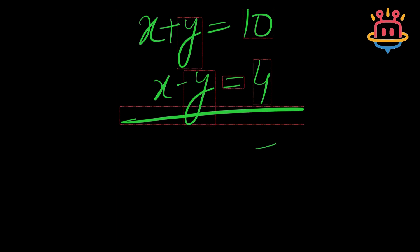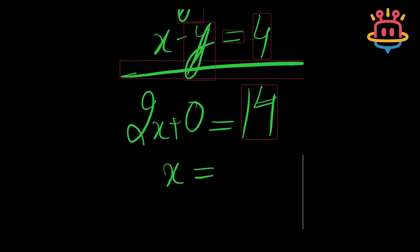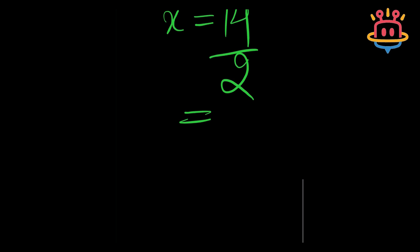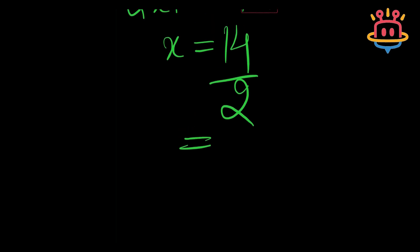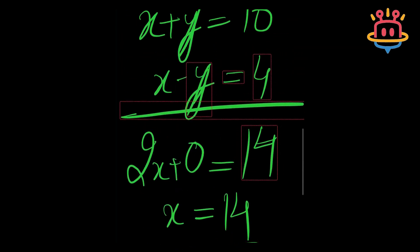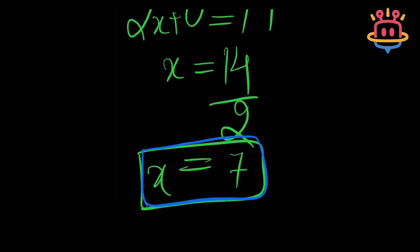When I add the two equations, y plus negative y cancels out to 0, and I'm left with 2x on the left side and 14 on the right side. The value of x can be calculated by dividing 14 by 2, so the value of x is 7.